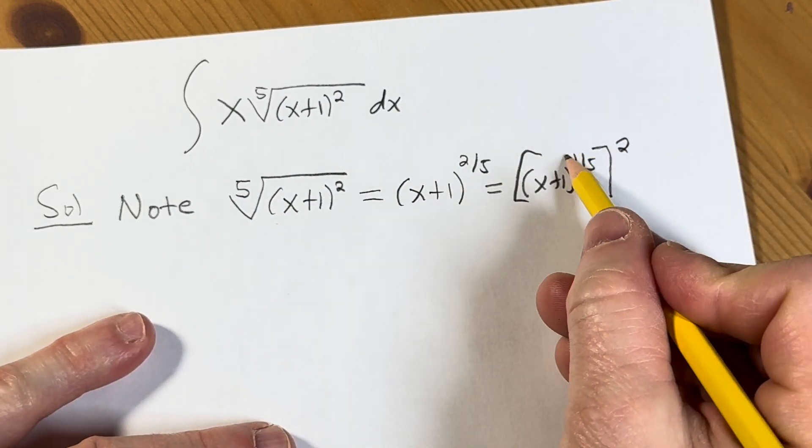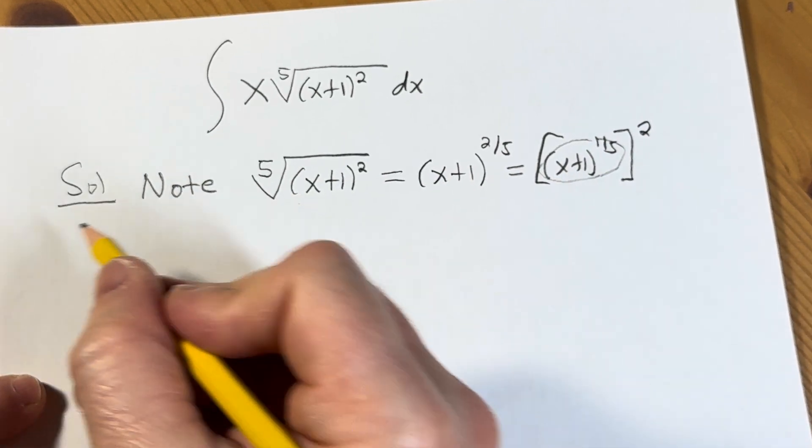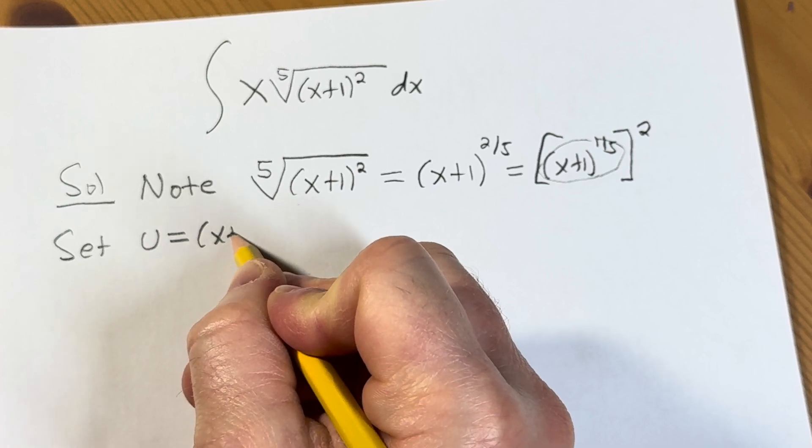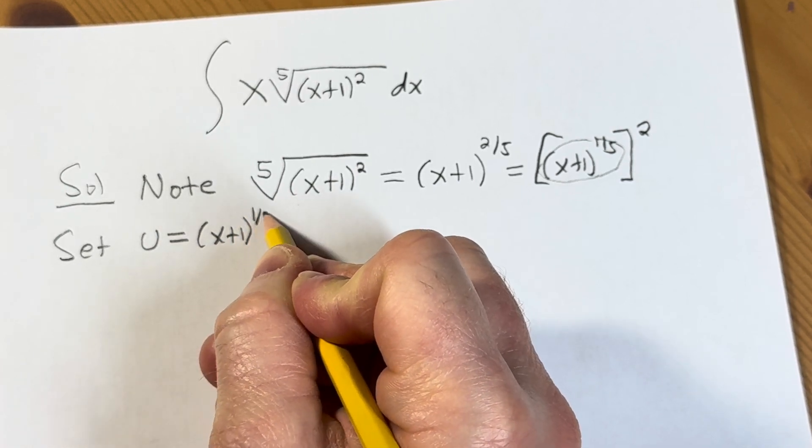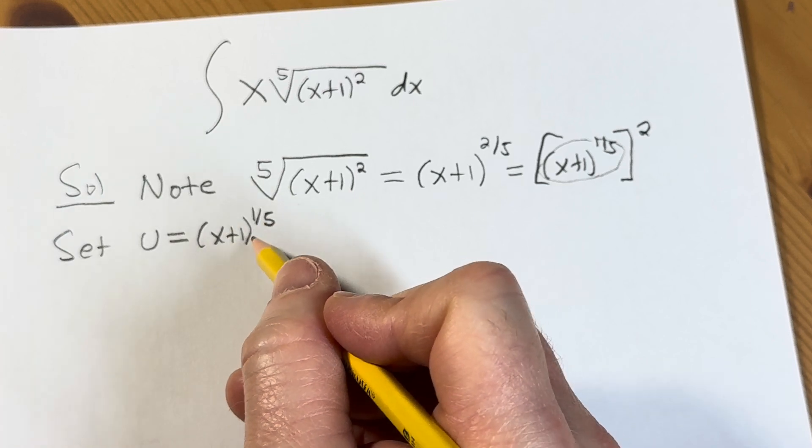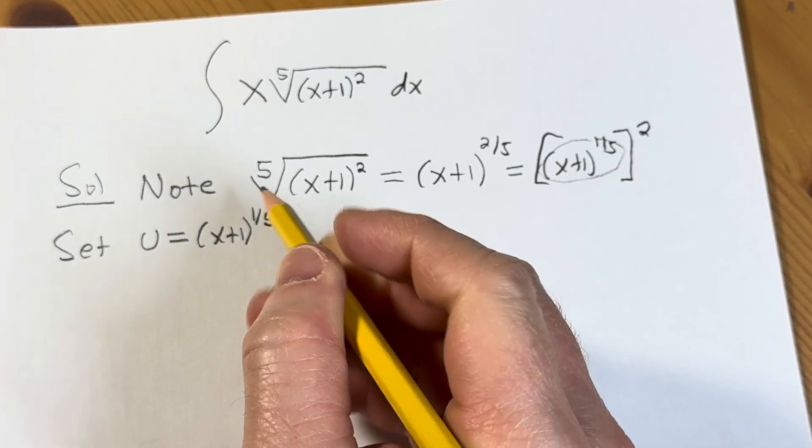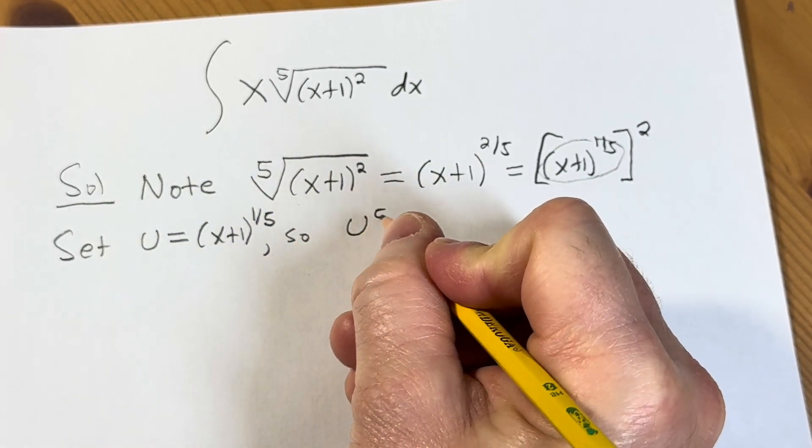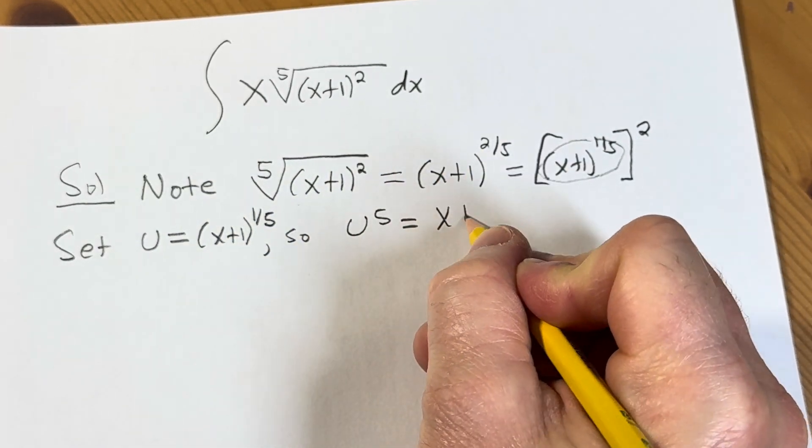So I'm going to let u be this entire thing here. We're going to set u to be equal to x plus 1 to the 1 fifth. And now in order to find our du, we have to differentiate this. But that's a problem because of the 1 fifth, it's ugly. So what we can do first is raise everything to the 5th power. So u to the 5th is equal to x plus 1.